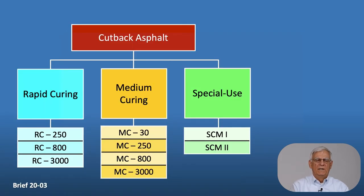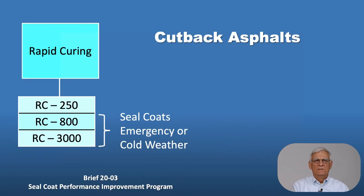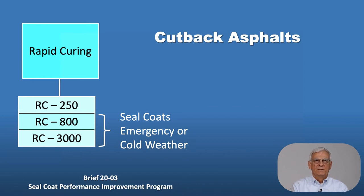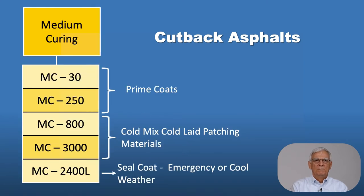Here are the designations for rapid curing, medium curing, and special use asphalt — again, cutback asphalts. In sealcoat emergency and cold weather applications, we sometimes use RC-800s and RC-3000s; those are not a routine asphalt used for chip seal applications. For prime coats, very common materials are MC-30 and MC-250 — they're fluid enough and cure slow enough to penetrate into the base courses. The MC-800 and MC-3000 can be used for cold mix cold made patching materials. An MC-2400L can also be used as a sealcoat application in emergency or cold weather.